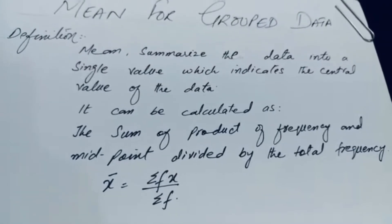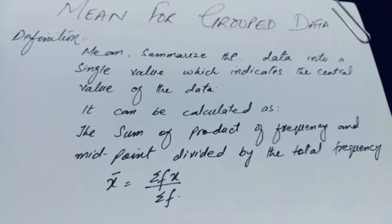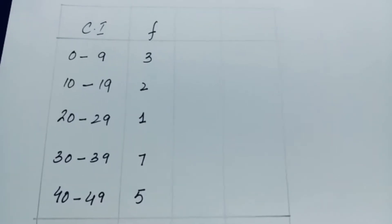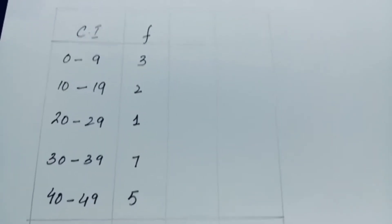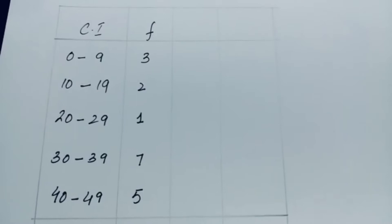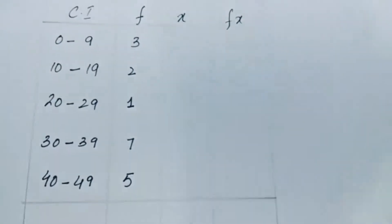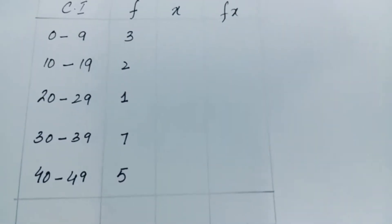Let's say we have a grouped frequency distribution and we have to calculate the mean. The class interval and frequency are given. According to the formula, we need x, represented by midpoint, and fx, which is the product of frequency and midpoint. So, how do we calculate the midpoint?